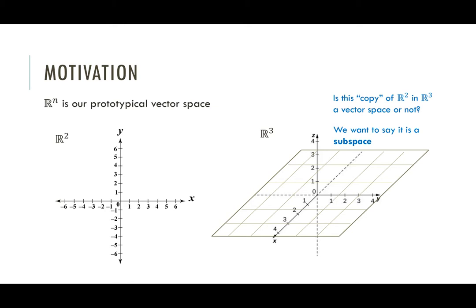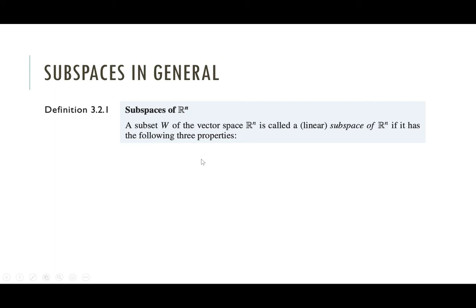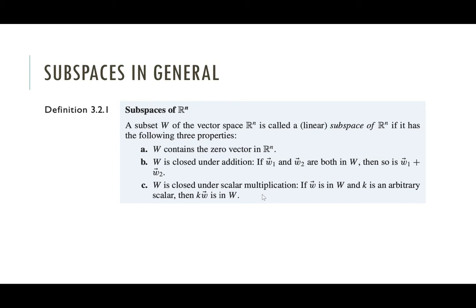So in general, we have the following definition. This is pulled from your book. So a subset W of the vector space Rn is called a linear subspace. Most other books would call this a vector subspace, but you see both. A subset of a vector space Rn is called a subspace of Rn if it has the following three properties. One, that subset contains the zero vector. Two, that subset is closed under addition, which means if you have two vectors in that subset, adding those vectors together will keep you in that subset. And then three, it's closed under scalar multiplication, meaning that if you have a vector in that subset and you scale it by some arbitrary scalar, then that scaled vector remains in the subset.